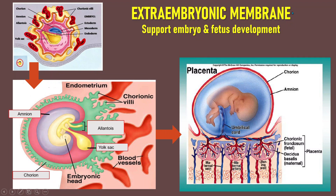Extra embryonic membranes also develop during embryogenesis to support embryo and fetus development. There are 4 embryonic membranes: amnion, chorion, yolk sac, and allantois. The amnion develops into the amnion sac filled with amniotic fluid. The chorion becomes part of the placenta. The allantois becomes the umbilical cord. The yolk sac is the site of red blood cell production for the fetus, and at the end of the first trimester, the yolk sac degenerates.